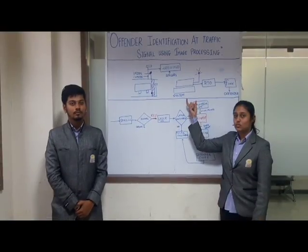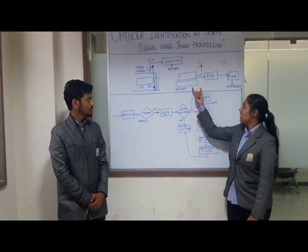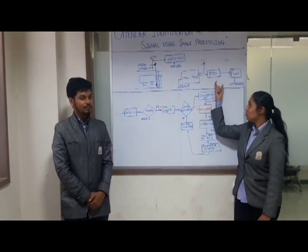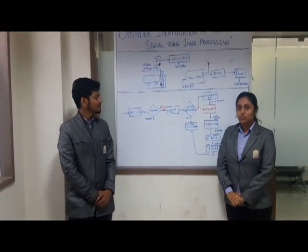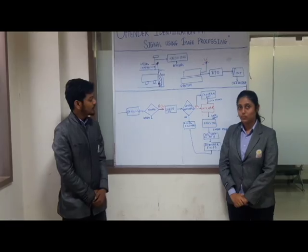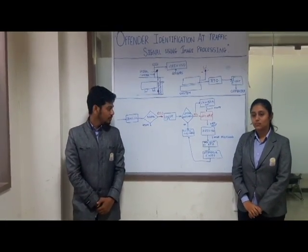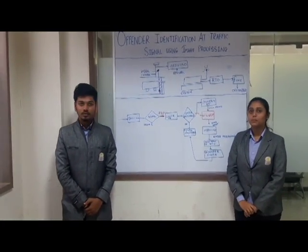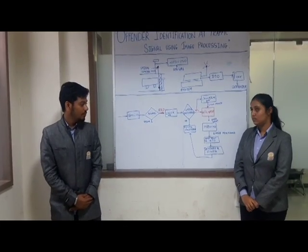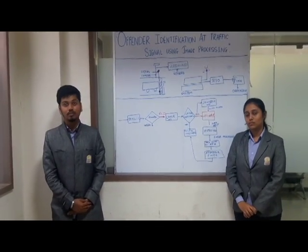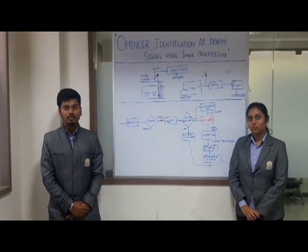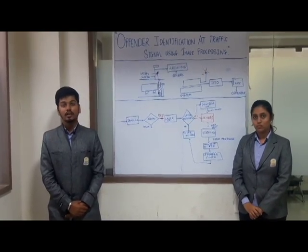The cameras are connected to the system. The database of the offender is sent to the RTO, whose role is to generate fines for the offender. Whenever data is collected by the Arduino, the image is processed and the processed image is sent to the RTO, by which the RTO can get to know about the offender's name, address, and other details by which they can be found.